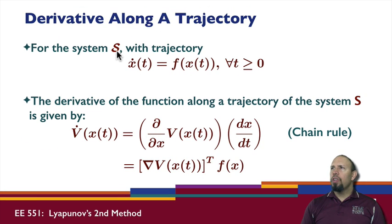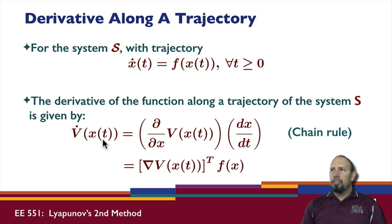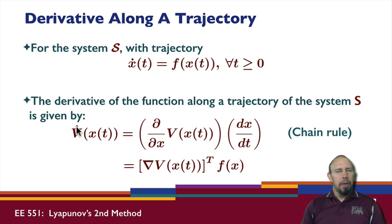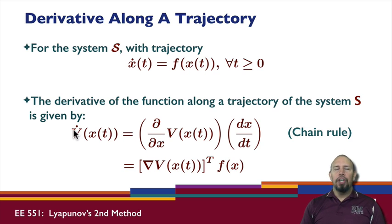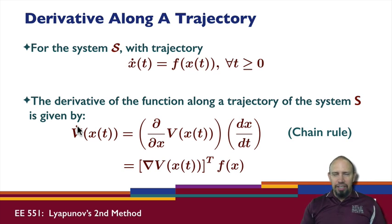For the system with trajectory given, the derivative of the function along the trajectory of the system is given by v-dot. So v-dot of x of t is the derivative of this function along the system trajectory. We want to take the first derivative of v with respect to time, not with respect to x. Remember, v of x of t is a scalar function, and it's a function of time because x is a function of time. So if we differentiate that, we get a scalar function of time. Even though within the function there are vectors and matrices, this is actually a scalar function of time.